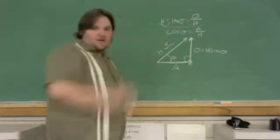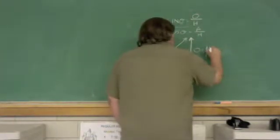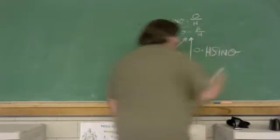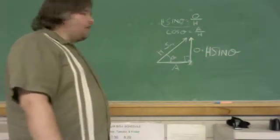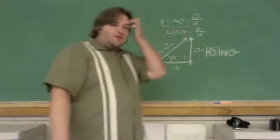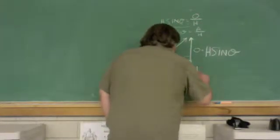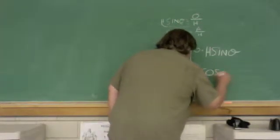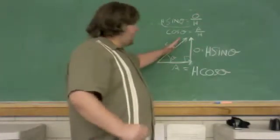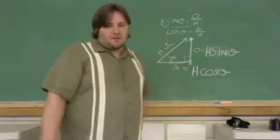I do the exact same thing for the adjacent component — I should probably write that a little bigger. This ends up turning into the hypotenuse times sine theta, whatever theta may be, and my adjacent into H cosine theta. So I've just decomposed that vector into two other vectors that are at a right angle to each other, making them independent.